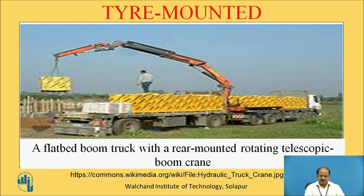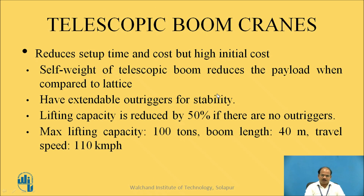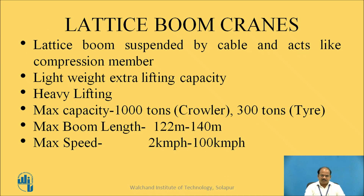For tire mounted cranes, tires are at the bottom of the truck and the boom is telescopic. A flatbed boom truck with a rear-mounted rotating telescopic boom crane is shown here. Telescopic boom cranes reduce setup time and cost but have a high initial cost. The self-weight of the telescopic boom reduces payload. They have extendable outriggers. Lifting capacity is reduced by 50%, with maximum lifting capacity ranging from 100 tons with a 40-meter boom length and a travelling speed of 110 km per hour. Lattice boom cranes are also shown with their characteristics.